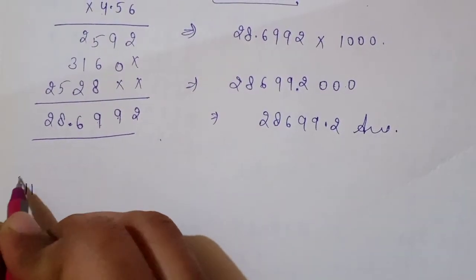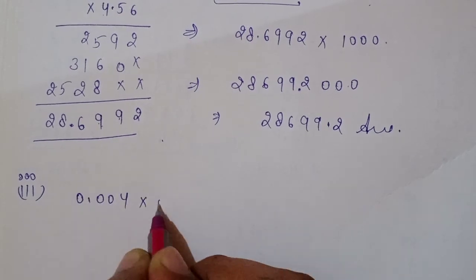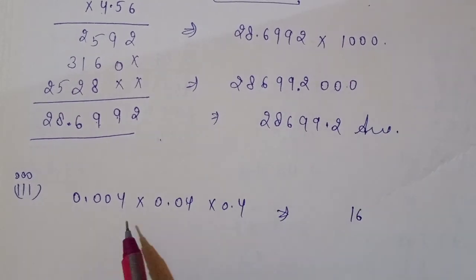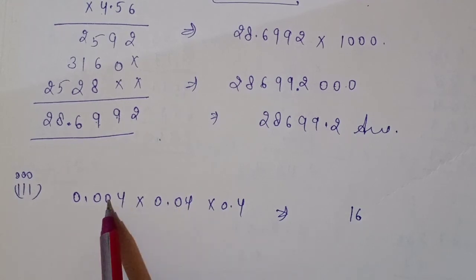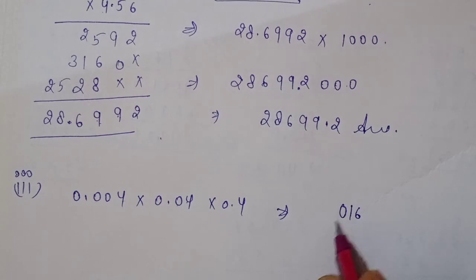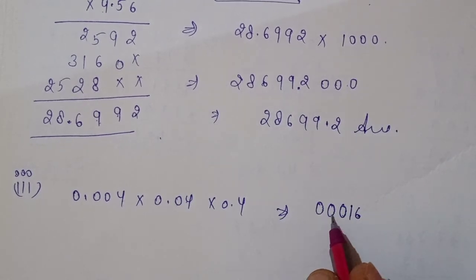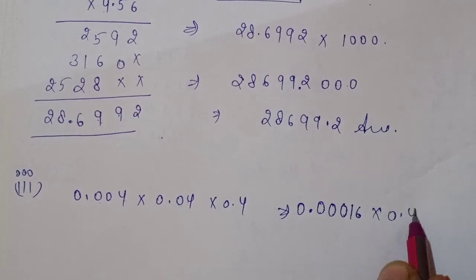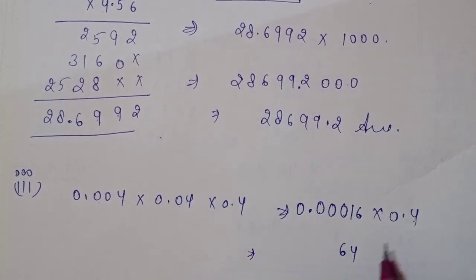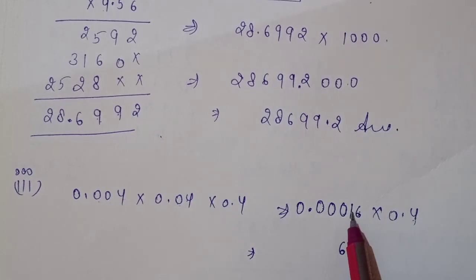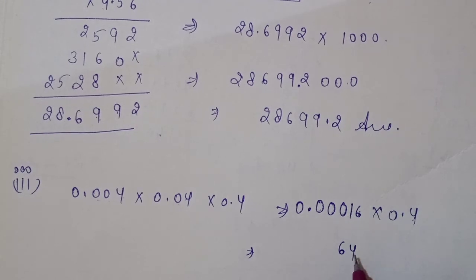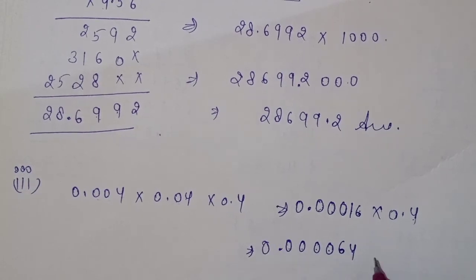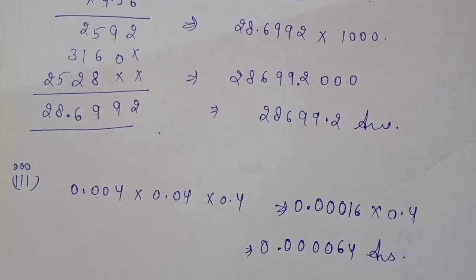Third part: 0.04 × 0.04 × 4. First, 4×4=16. Count decimal places — one, two, three, four, five — so five decimal places giving 0.0016. Still need to multiply by 4: 16×4=64. Now six decimal places total — count one, two, three, four, five, six from the right — place decimal. This is the answer.